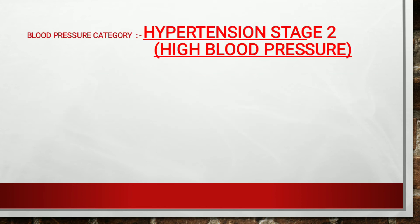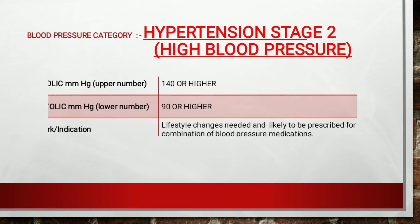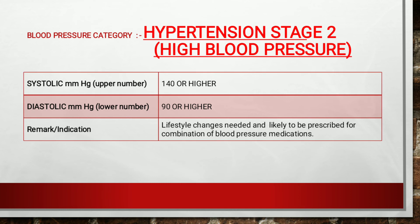For hypertension stage 2, the systolic range is 140 mmHg or higher, whereas diastolic is 90 mmHg or higher. Here, lifestyle change is highly recommended and the individual is likely to be prescribed a combination of blood pressure medications.